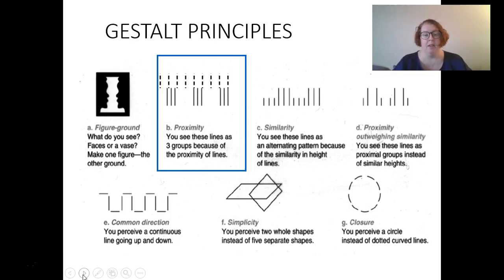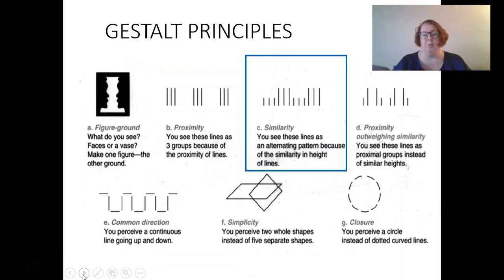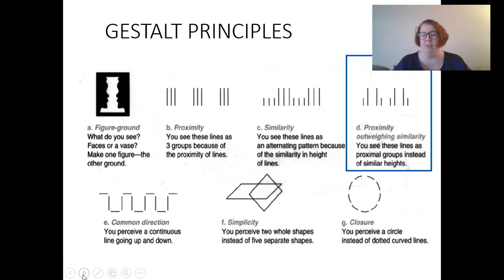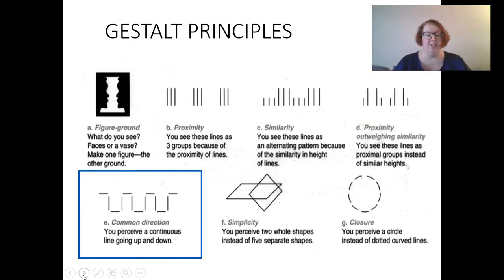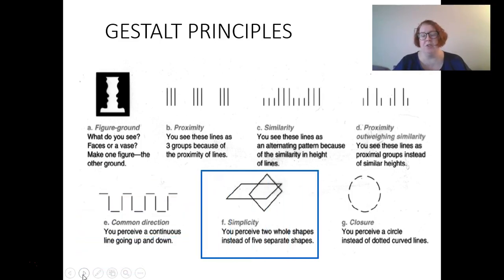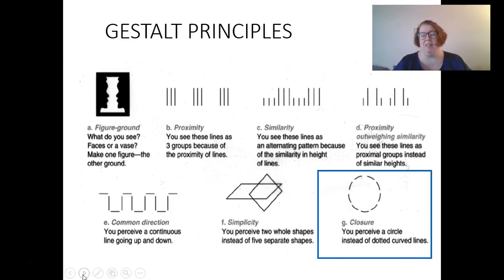Similarity — we see lines as similar that are in similar shape, and that helps us distinguish. We can see how proximity outweighs similarity. Common direction — we see a line as continuous even though it's not, lines going up and down. We see two shapes rather than five separate shapes because of simplicity — we break this down more easily. And we perceive a circle rather than dotted lines for closure — our brains automatically make a closure rather than just seeing a series of dotted lines. This helps us perceive things more easily and make sense of our environment quickly. We can take advantage of these pattern recognitions in our memory — that's prior knowledge.